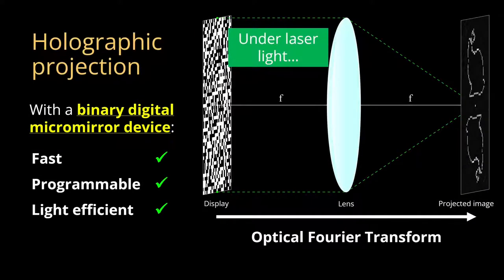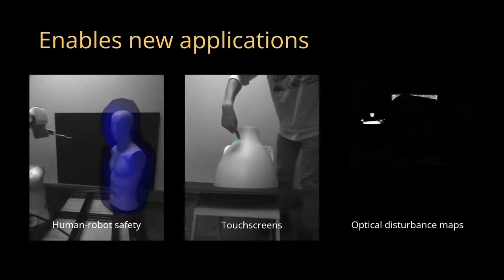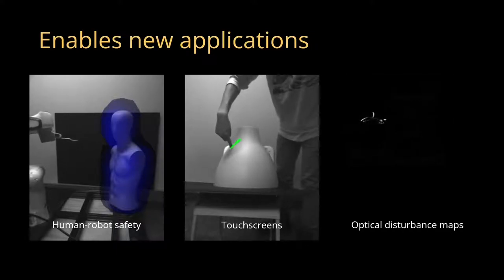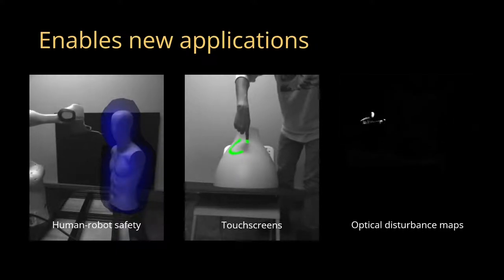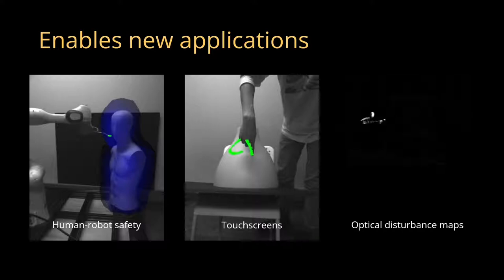In particular, if we combine a binary digital micromirror device with the Fourier transforming properties of a lens under laser light, we can build a projector that is fast, programmable, and light efficient. With this system, we can create complex light curtains that were impossible for previous approaches.